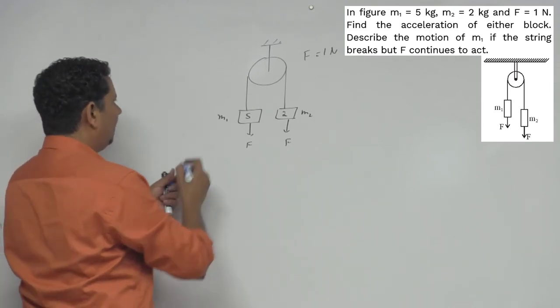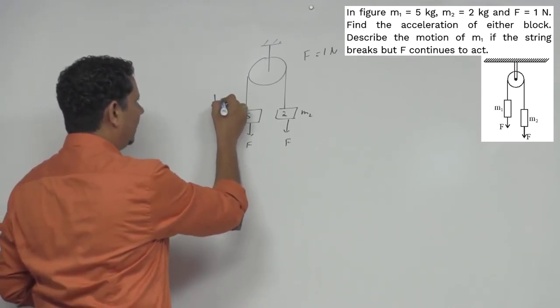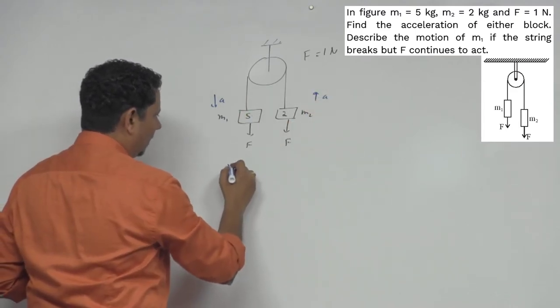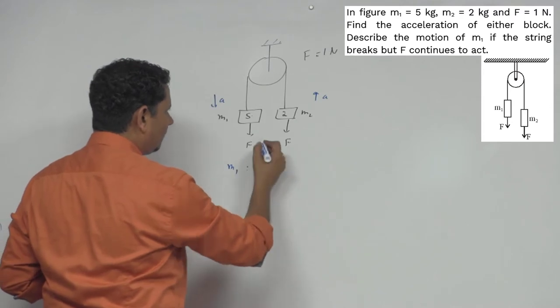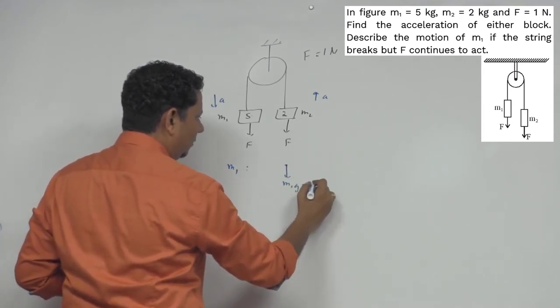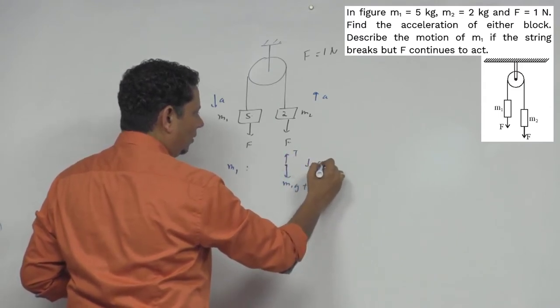Now let us assume your acceleration is in this direction, m1 has acceleration a, and this has upward acceleration a. Now if we make the FBD for m1 block, there's a downward force m1 g plus F, and upward your tension T.